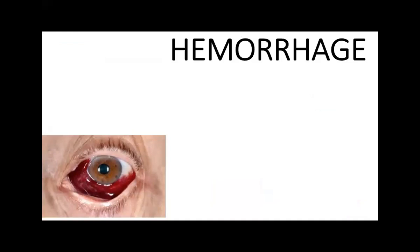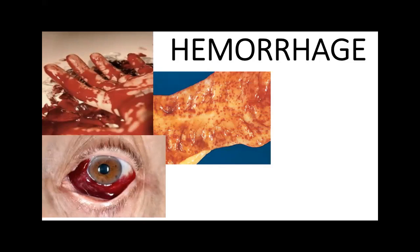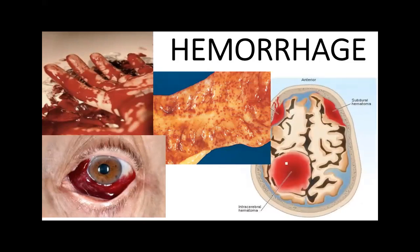These are certain types of bleeding which we can see. This is a subcorneal hemorrhage — basically a major vessel cut. This is the kind of bleeding that takes place in the internal organs. These are small patches of bleeding. There are also problems in the brain: intracranial hematomas, subdural hematomas — these are major central nervous system disorders.